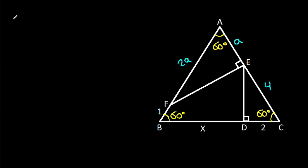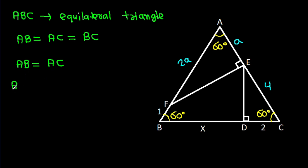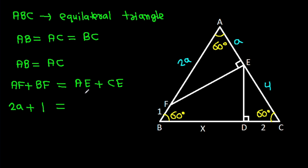We know ABC is an equilateral triangle, so AB equals AC equals BC. AB equals AF plus BF, and AC equals AE plus CE. So 2A plus 1 equals A plus 4. Therefore 2A minus A equals 4 minus 1, giving A equals 3.